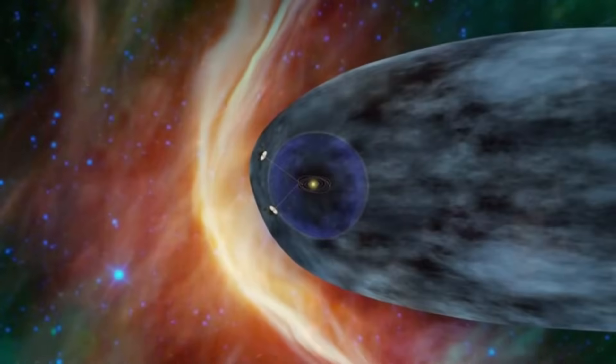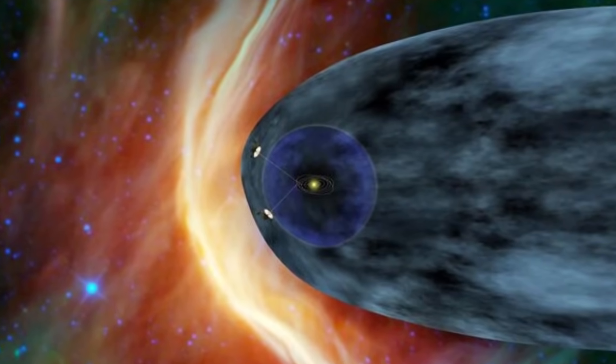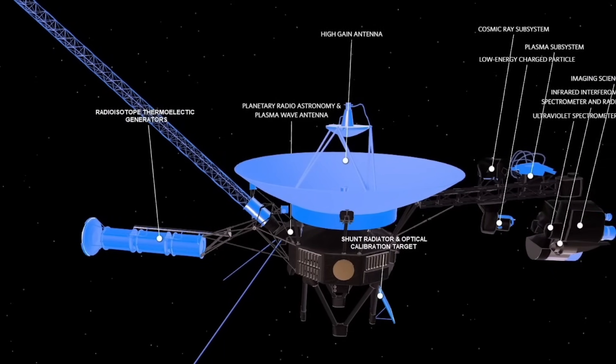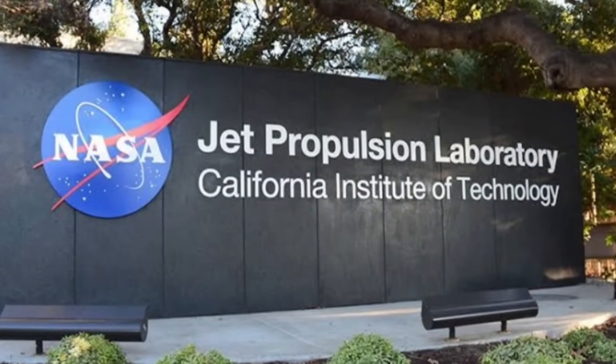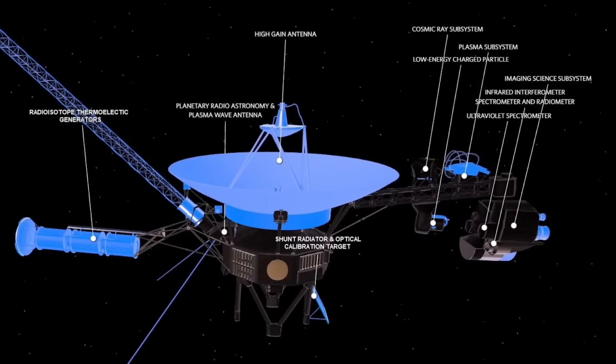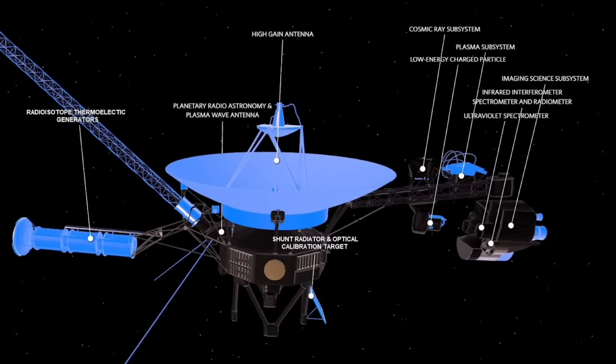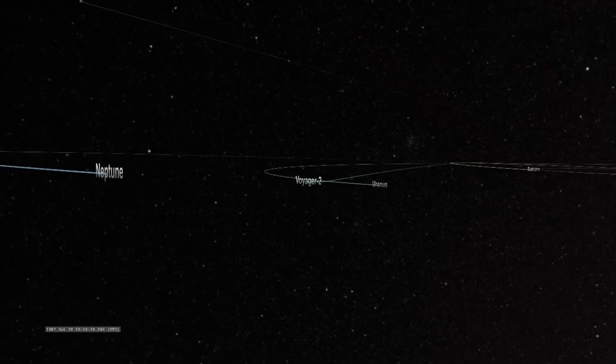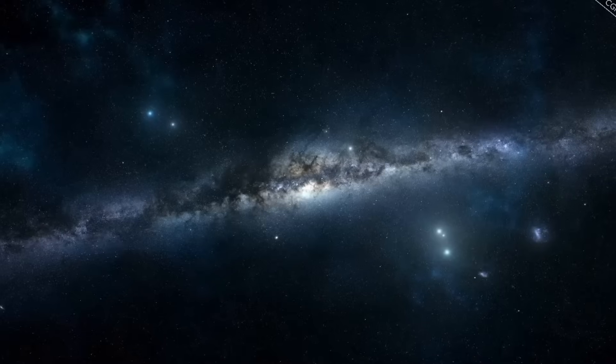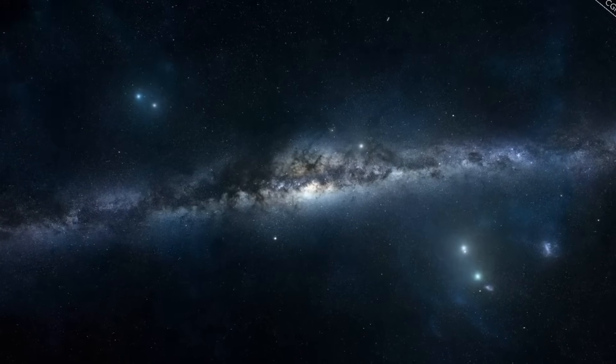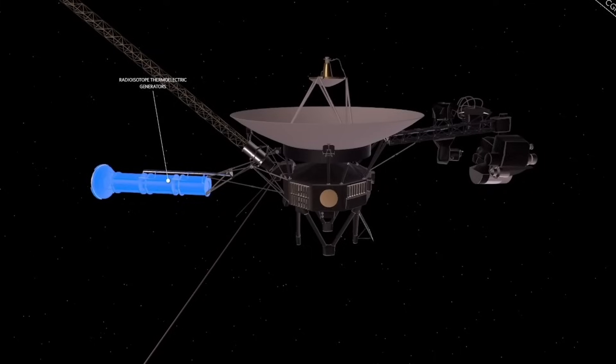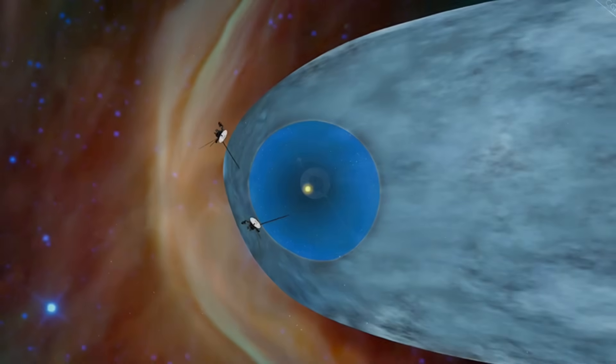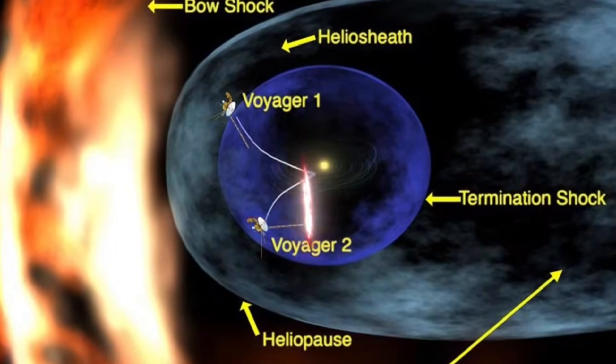This isn't just about an old spacecraft sending back cool data, it's about the endurance of vision. Voyager 1 launched in 1977, over 46 years ago, using technology that, by modern standards, is ancient. It has roughly 68 kilobytes of memory. It communicates using a 23-watt transmitter, less power than your average refrigerator light bulb. And yet, with the help of decades of upgrades, both on the ground and through clever reprogramming in deep space, it continues to expand the frontier of what humanity can observe.